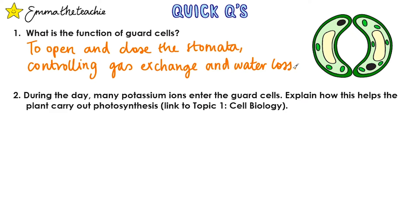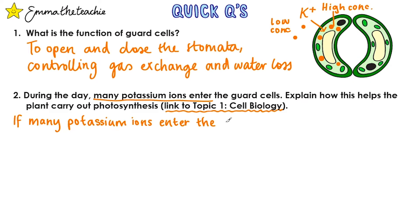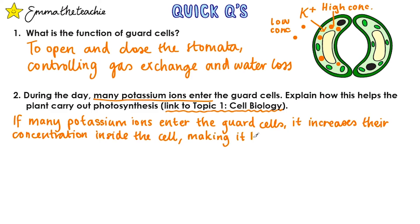Question 2: During the day, many potassium ions enter the guard cells. Explain how this helps the plant carry out photosynthesis. This links to topic 1, cell biology. If many potassium ions enter the guard cells, it increases their concentration inside the cell, making it higher than outside the guard cells.